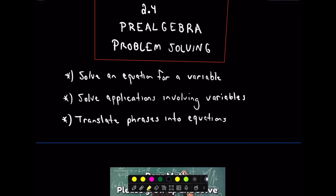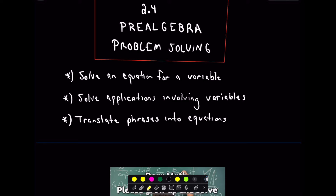This is section 2.4 of my pre-algebra series, called Problem Solving. We'll talk about solving an equation for a variable, isolating different variables depending on what's requested or the situation at hand. We'll solve applications involving variables. We've been learning techniques to solve linear equations, and now we want to find real-life situations where we encounter linear equations. And lastly, we want to be able to translate phrases into equations.